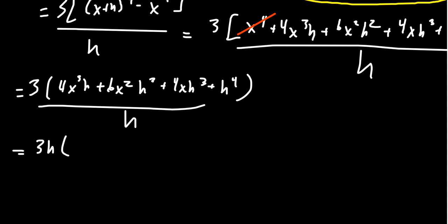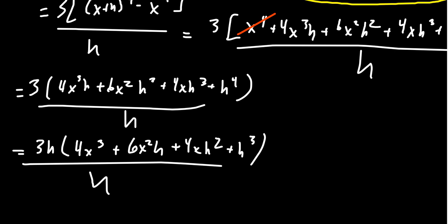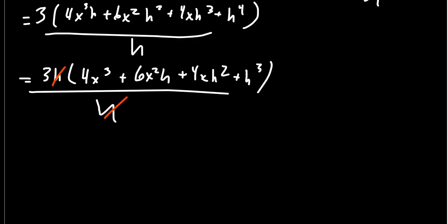So you get 3 times h times 4x³ plus 6x²h plus 4xh² plus h³. This all sits above h, for which then that h cancels out. And so then we have that delta y over delta x, this is going to equal 3 times 4x³.